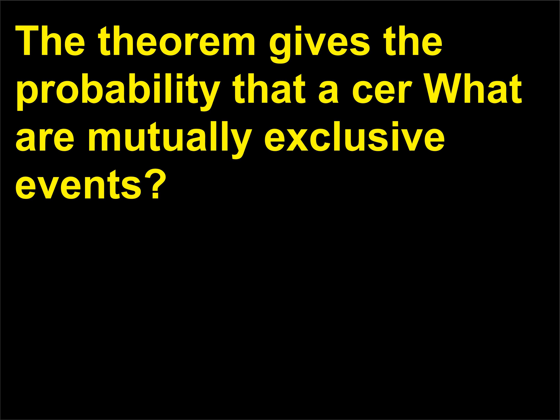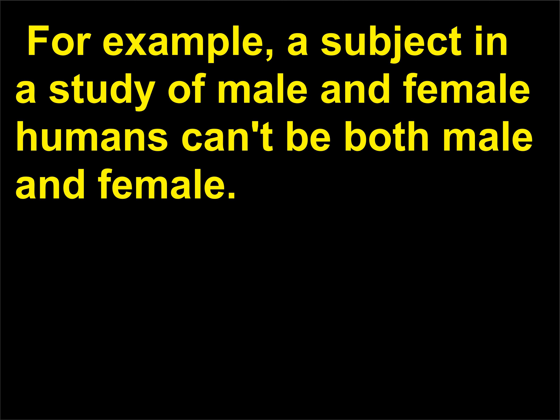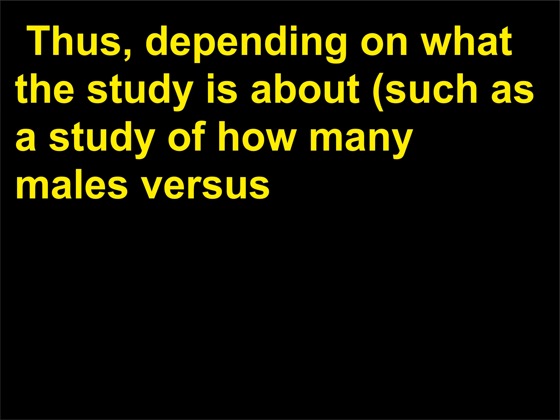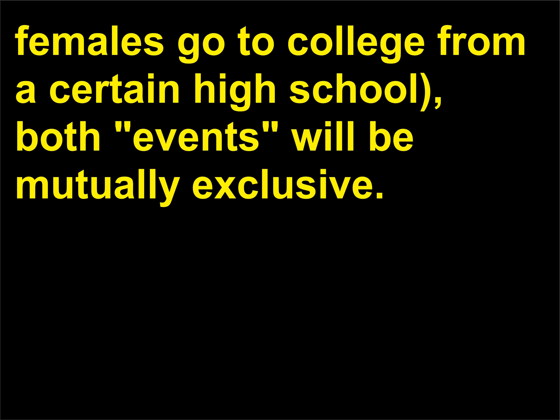What are mutually exclusive events? Mutually exclusive events are those that are impossible to occur together. For example, a subject in a study of male and female humans can't be both male and female — males are males, females are females. Thus, depending on what the study is about — such as a study of how many males versus females go to college from a certain high school — both events will be mutually exclusive.